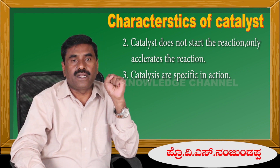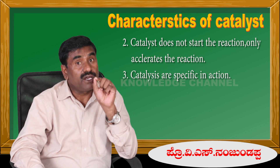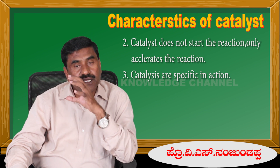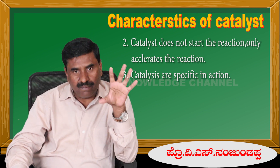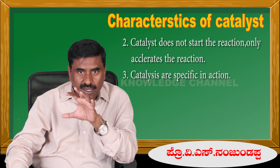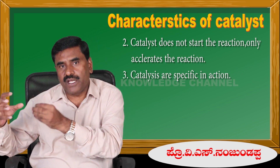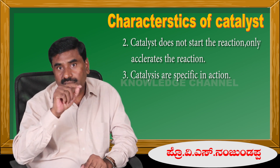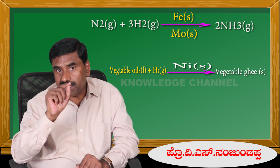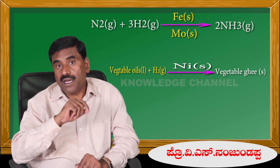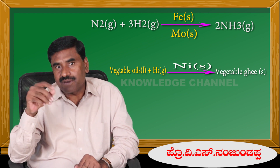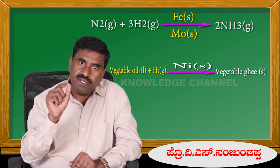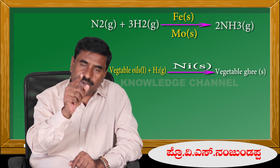For example, in the decomposition of potassium chlorate, manganese dioxide is used as a catalyst. In the synthesis of ammonia, nitrogen combines with hydrogen to form ammonia, and powdered iron is used as a catalyst. For the hydrogenation of oils — converting oils into fats — nickel is used as a catalyst.